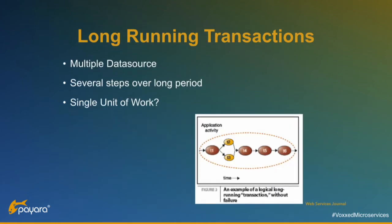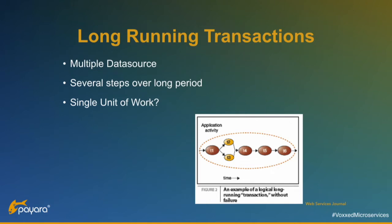Another issue with transactions is what's called long-running transactions. You can have multiple data sources, but the most important thing is you have a business process with different steps where each step can be done by a different person, like a workflow. Between the beginning and the end, it can be several minutes or several hours before the flow is finished. Where do you save your data to the database? Only at the end? And then you have the issue that data is already read before it's maybe cancelled in step five. So what is your single unit of work in such a long-running transaction?